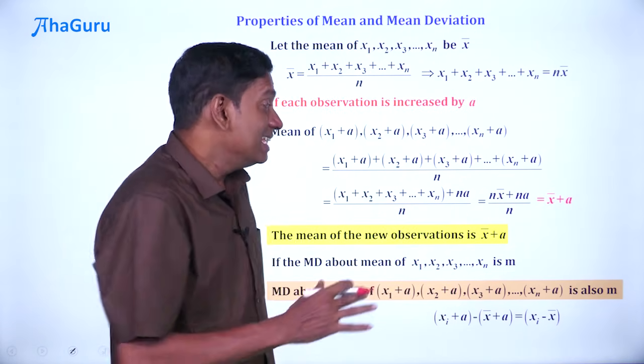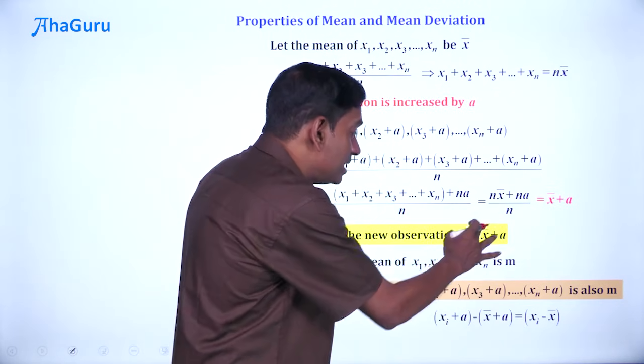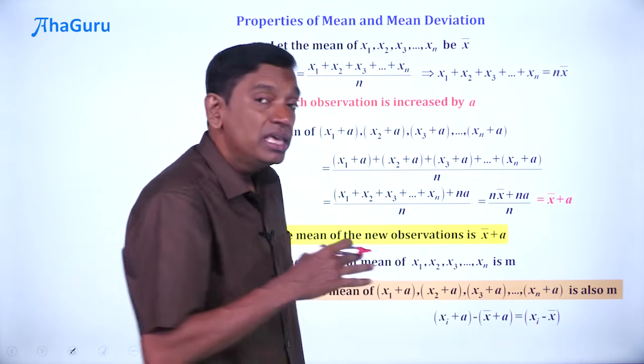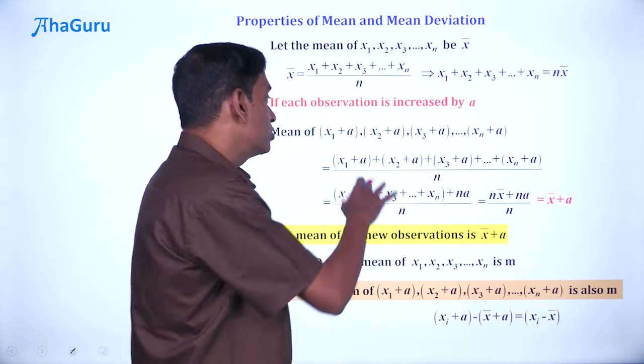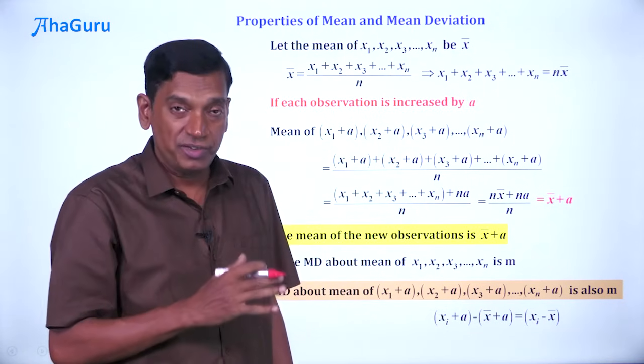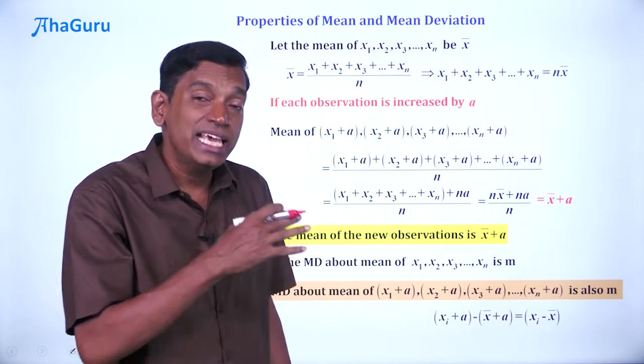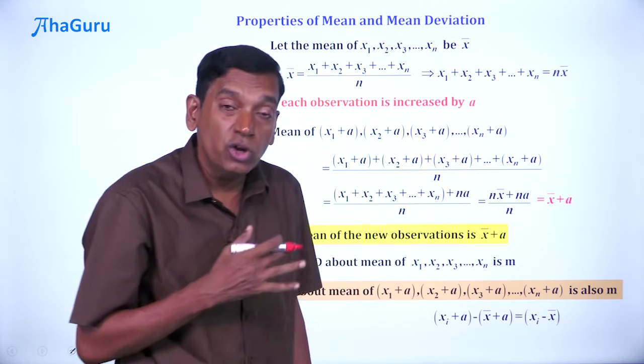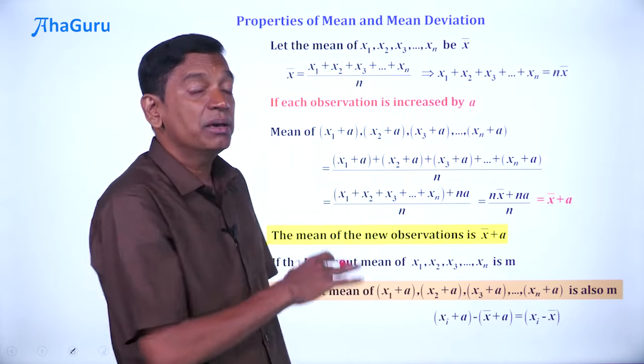The mean is increased by a, but the mean deviation remains the same if you add a constant to all observations. This is also known as change of origin. Change of origin affects the mean but not the mean deviation about the mean.